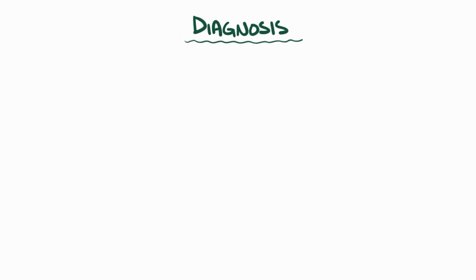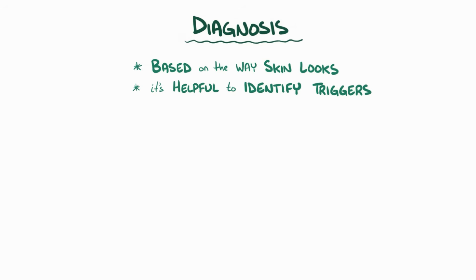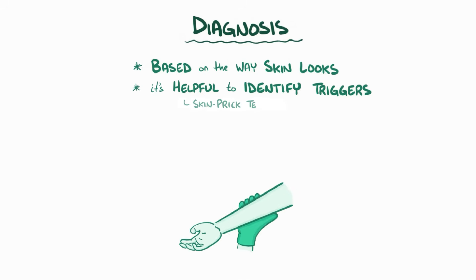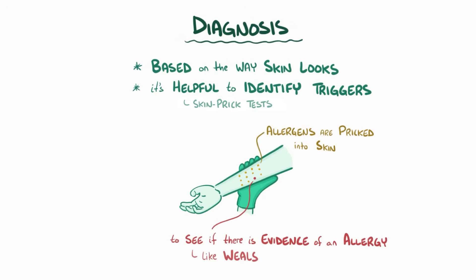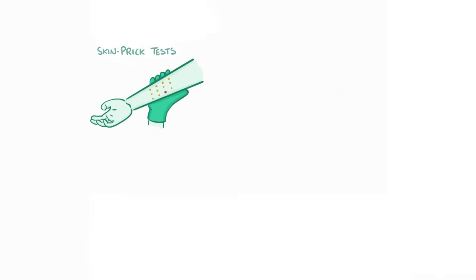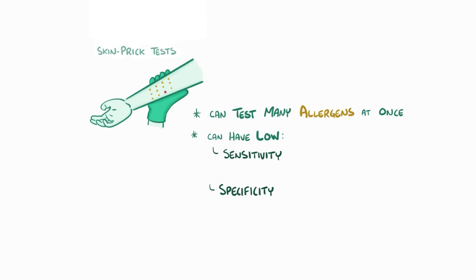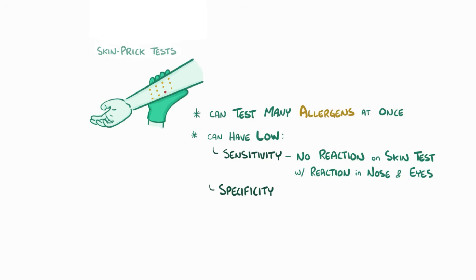The diagnosis of allergic rhinitis is generally based on simply the way the skin looks, and when possible it's helpful to identify the allergic trigger so that a person can avoid it in the future. One way to identify an allergic trigger is with a skin prick test, where small drops of allergens are placed on the skin and then pricked into the skin with a tool, to see if there's evidence of an allergy like raised bumps or wheals — itchy red skin. These can test for a lot of allergens at once, but they can sometimes have low sensitivity as well as low specificity. In other words, sometimes a person might have no allergic reaction on the skin test but have a localized allergic reaction affecting the nasal cavity and eyes — that's low sensitivity. Other times a person might have a skin reaction to something even though they don't normally have symptoms when they encounter an allergen in their everyday life — and that would be low specificity.